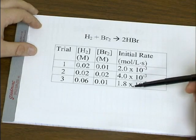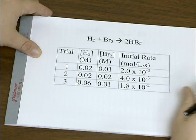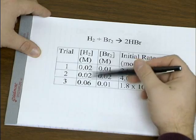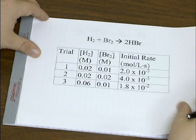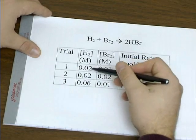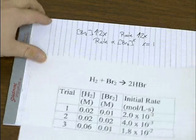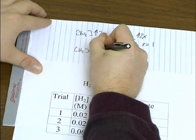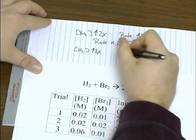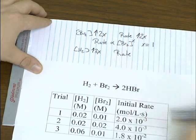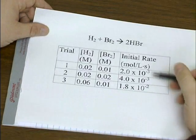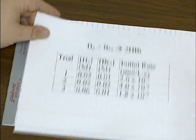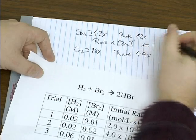Let's compare trials one and three where you vary the concentration of hydrogen. In this case it looks like you've tripled the concentration of hydrogen, increased it by a factor of three. And the result, if you divide these two, is that the rate increases by a factor of nine.